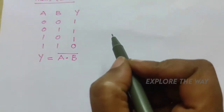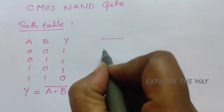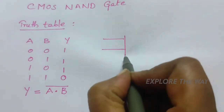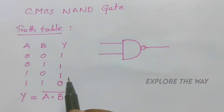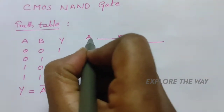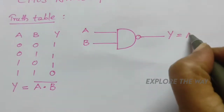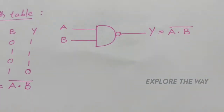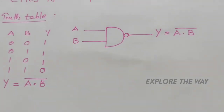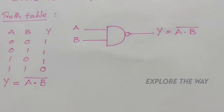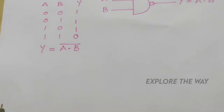The logic symbol for a two-input NAND gate is as shown. Now we have to implement this logic function Y = (A·B)̄, and there are a number of steps to implement this.